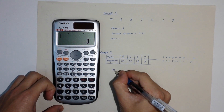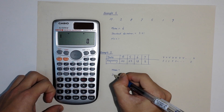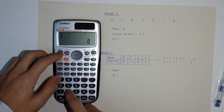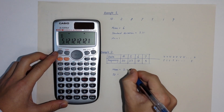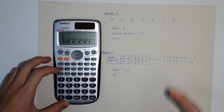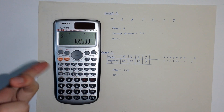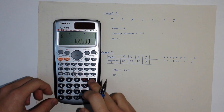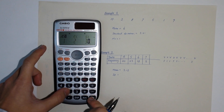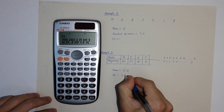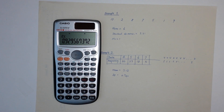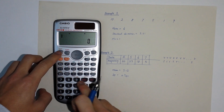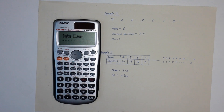To find the mean and standard deviation, press Shift 2 1 — the mean is approximately 5.12. If you want the fraction form, you can convert it. That's how you work out everything. Remember every time to press Shift 9 1 before entering your data.